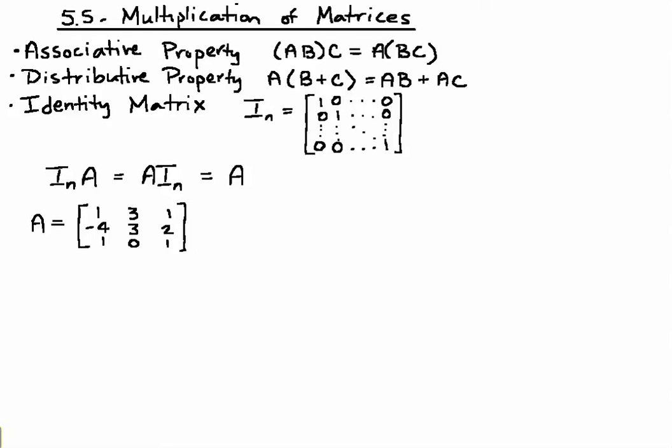And then the last property is the identity matrix. This is equivalent to the multiplicative identity of multiplication. This is when you have a bunch of zeros and a bunch of ones. We'll see in this example that we'll get the same matrix when we multiply matrix A times our identity.